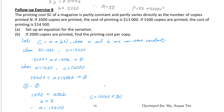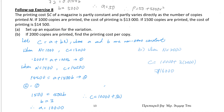Same idea — equation 2 minus equation 1. Left-hand side: 1500. a minus a is 0, so we get 500b. Then divide 500 on both sides to find b. After that, find a. When n equals 2000, you are asked to find c. c equals 16000.